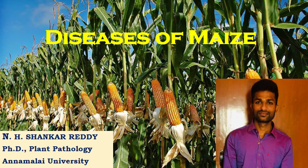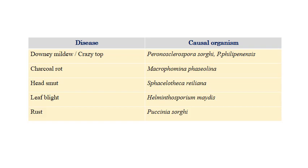My name is Janet Shankar Reddy and I'm doing a PhD in plant pathology at a normal university. Coming to the list of diseases: downy mildew, otherwise called as crazy top, is caused by Peronosclerospora sorghi or Peronosclerospora philippinensis. Charcoal rot is caused by Macrophomina phaseolina, whereas head smut is caused by Sphacelotheca reiliana. Leaf blight is caused by Helminthosporium and is divided into two types — northern corn leaf blight and southern corn leaf blight.